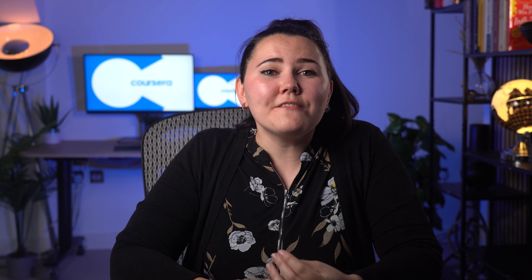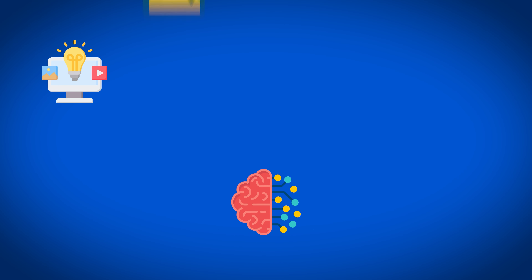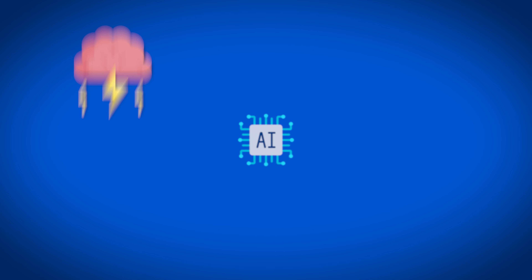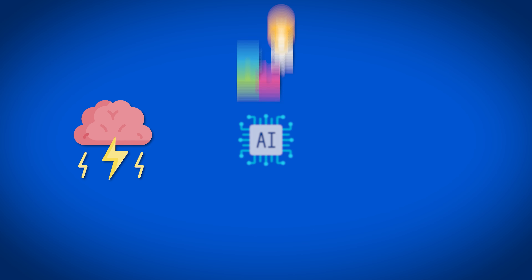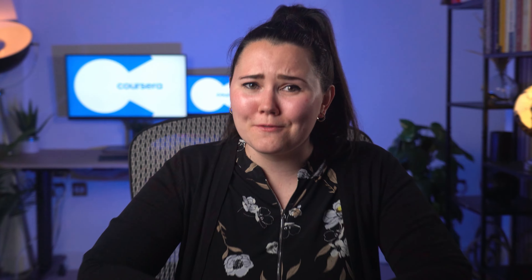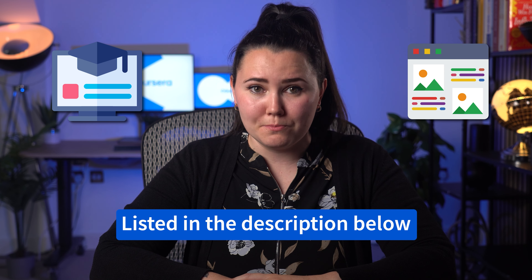Understand the basics. Generative AI, simply put, is AI that creates new content — art, music, text, even code. Imagine having a tool to brainstorm ideas, overcome creative blocks and generate new content. Sounds cool right? Start by getting a grasp on how it works through beginner courses or articles like those listed in the description below.